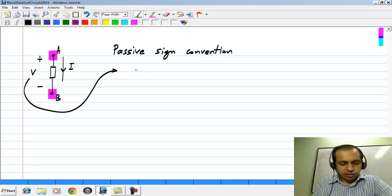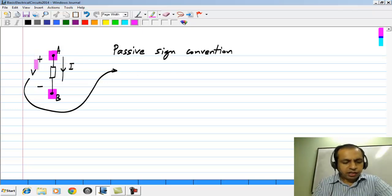If we define the voltage like this, then the current I should be defined as going into terminal A, that is whichever terminal is defined as the positive value for the voltage.